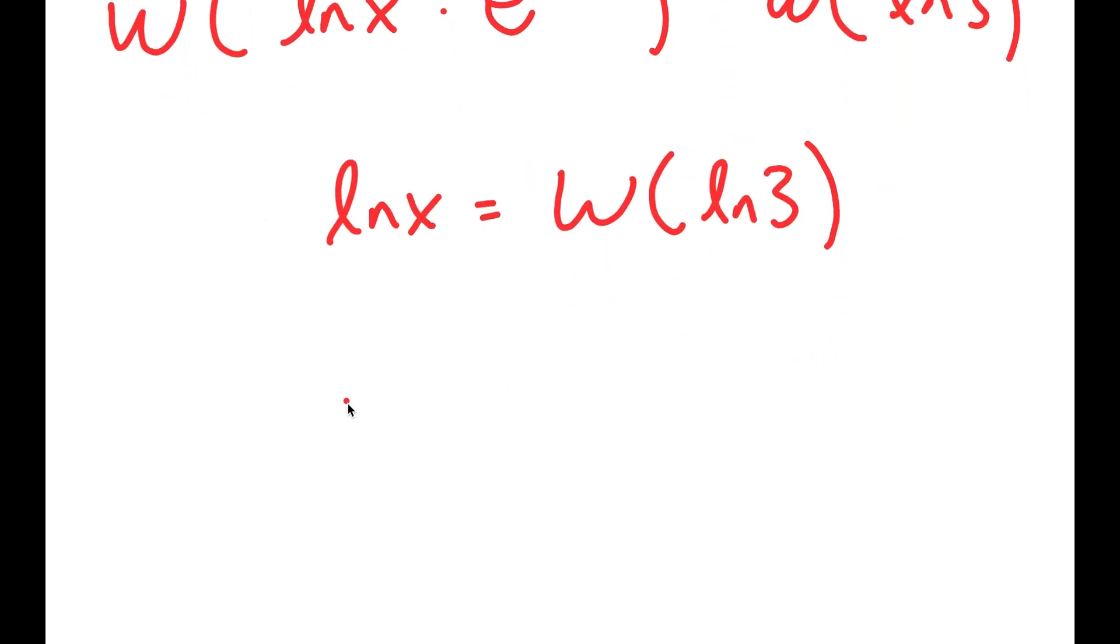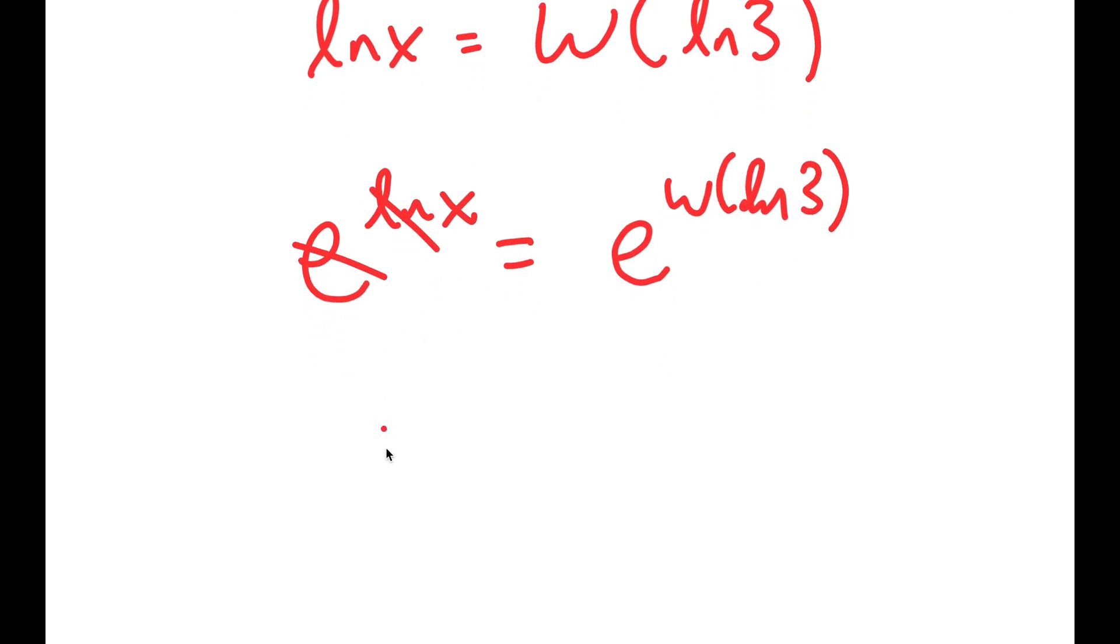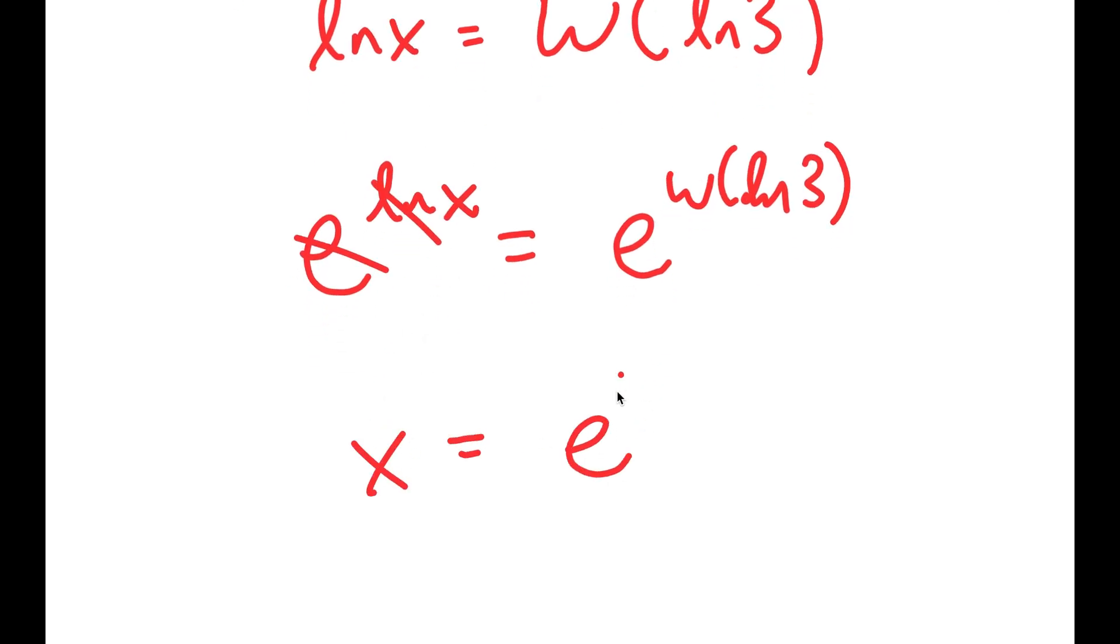Now, I want to get rid of this ln, so I'm just going to take e to the power of both sides. e to the power of ln cancel out, so I get x is equal to e to the power of W of ln of 3. So this is my answer to this equation.